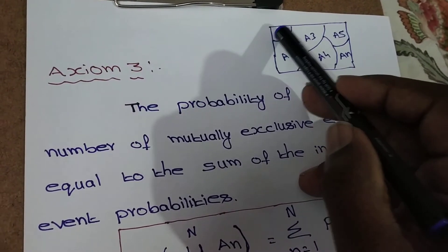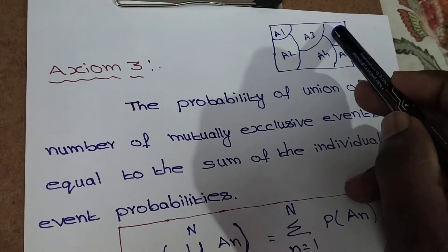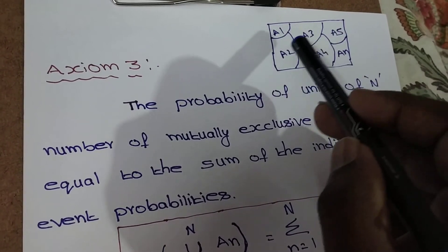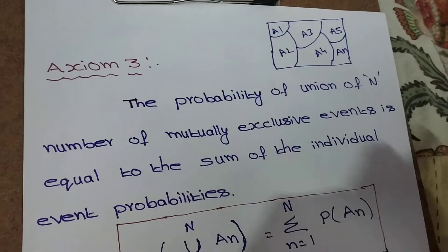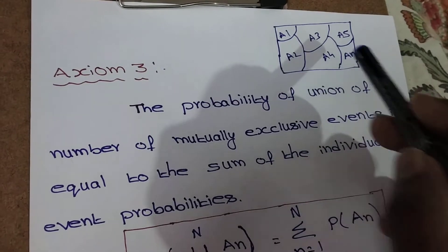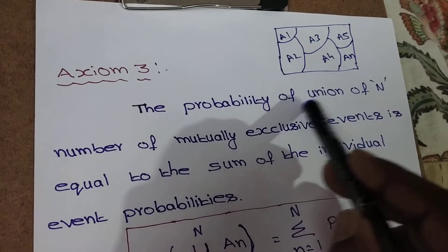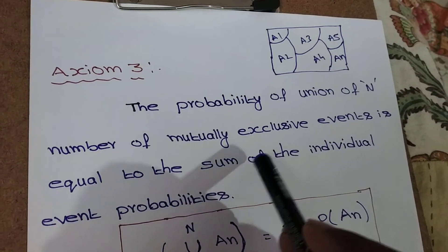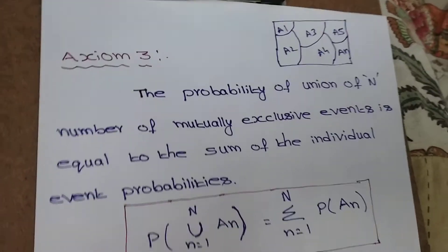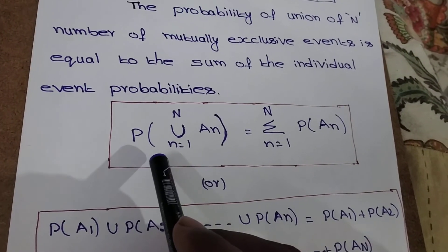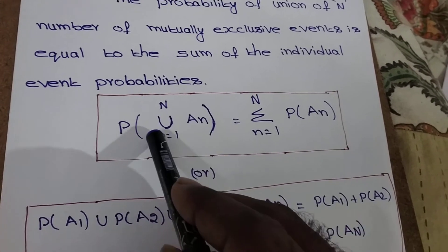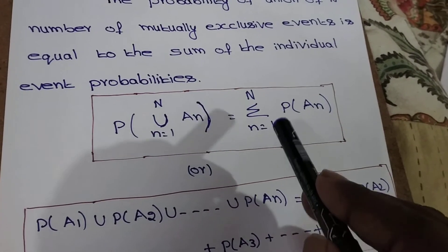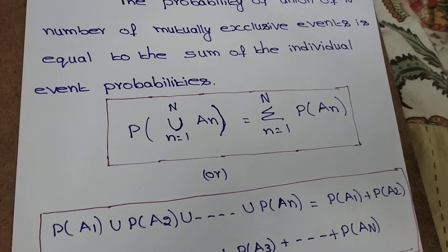N mutually exclusive events means A1, A2, A3, A4, A5, up to AN — all the events are mutually exclusive, meaning all the events are not the same. The probability of the union of N mutually exclusive events is equal to the sum of the individual probabilities. So axiom 3 can be written as: probability of union from N=1 to N of AN equals summation from N=1 to N of P of AN.